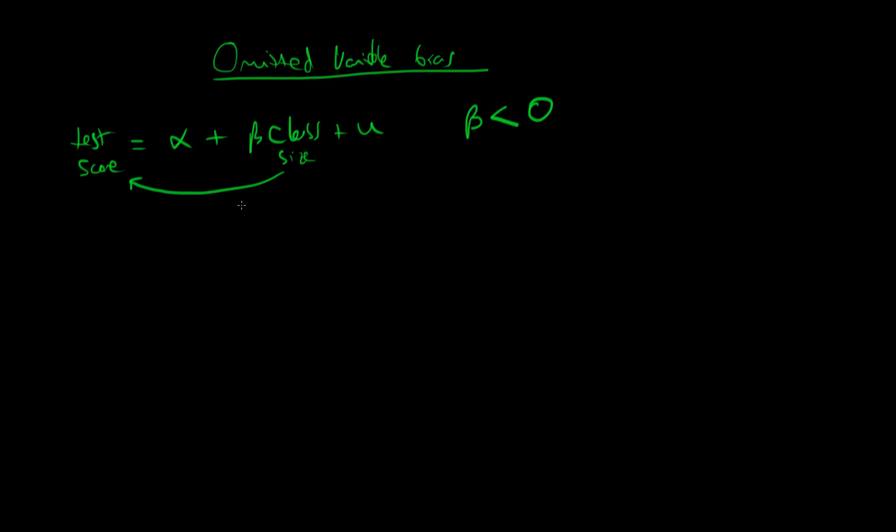So let's say that we estimated this model and then we used least squares to estimate the population parameter beta. Do we think that beta in this case is going to be a fair guess of what the population parameter is going to be?